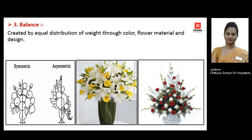In simple words, the main motive of balance in flower arrangement is to create an equal distribution of visual weight — the movement of your eyes should be in one direction when looking at any flower arrangement. It should not be that your eyes are moving haphazardly and are confused; rather, the eye movement has to be systematic. This can be created through your color, flower material, plant material, and design.